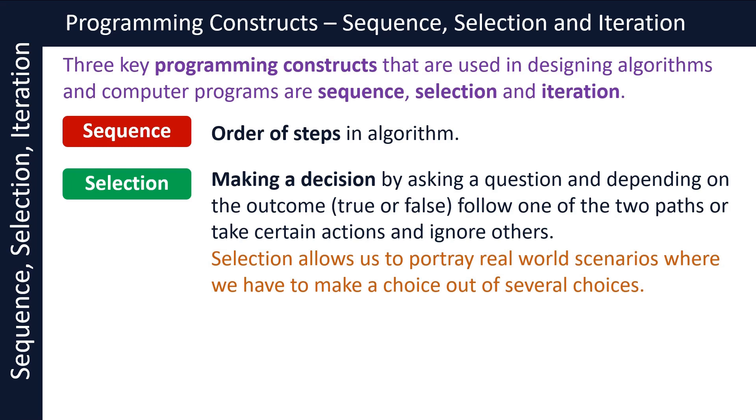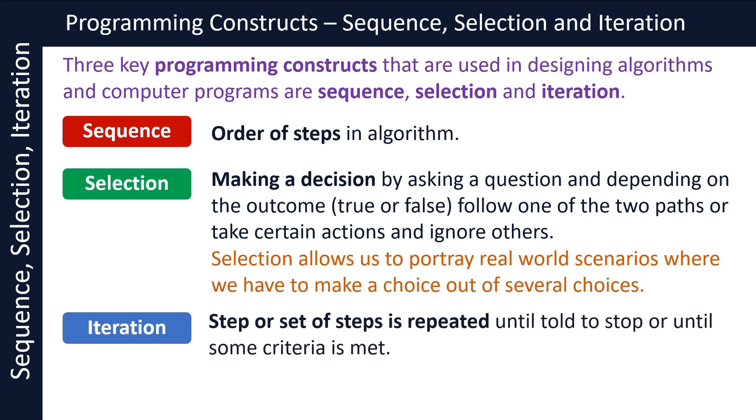Iteration: here a step or set of steps is repeated until told to stop or until some criteria is met. Iteration makes algorithms simple as you have to mention steps that will be repeated only once and avoid inclusion of unnecessary steps in the algorithm.